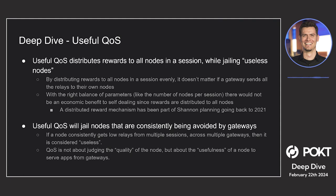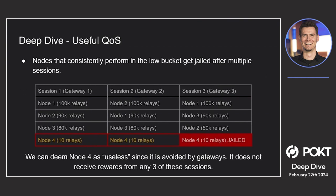Gateways are incentivized to send relays to quality nodes, which naturally — in what Daniel likes to call an 'implicit' fashion — allows you to find out who is actually providing real quality based on how gateways are actually using the nodes. QoS is not about judging the quality of a node per se; it's about usefulness. You define usefulness by how much the node is being used by apps and gateways on the network.